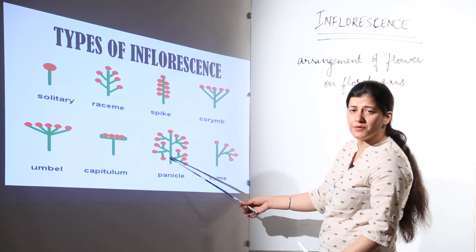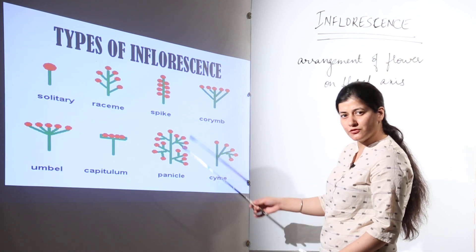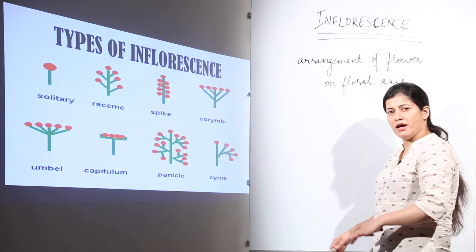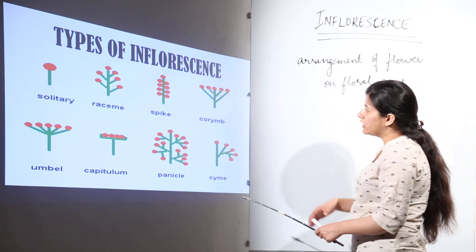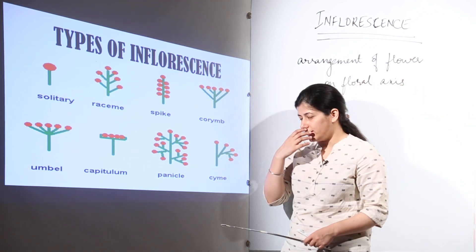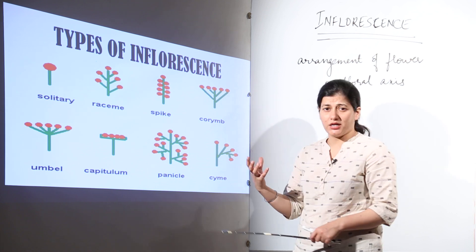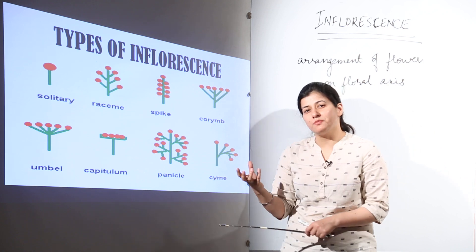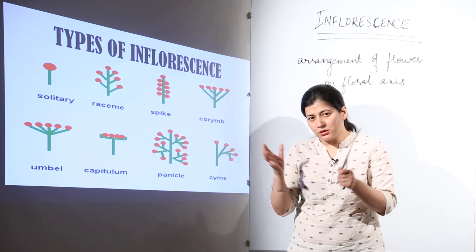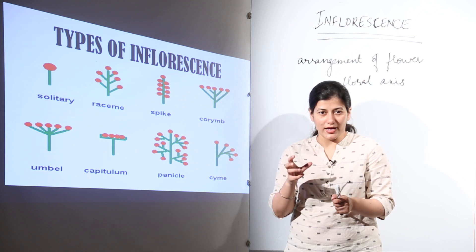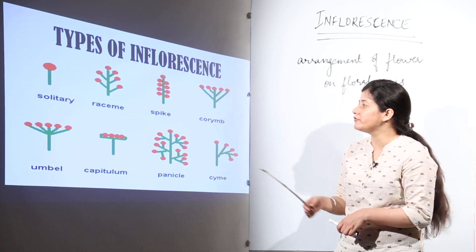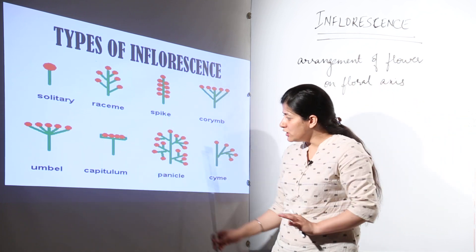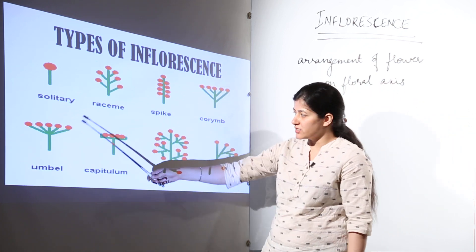We are going to see different types of inflorescence. This is a simple line diagram to represent how many types of arrangements of flowers you can observe. The flowers have multiple arrangements — they are arranged according to different patterns, and that makes them beautiful. Supposedly a flower has small flowers, so it would prefer to become conspicuous by clustering all those flowers together. That comes under our study of inflorescence.